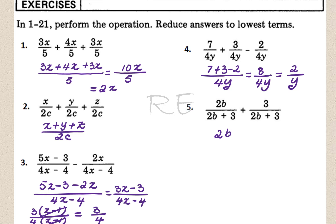We can add the numerators and keep the same denominator: 2b plus 3 over 2b plus 3, which is equal to 1.